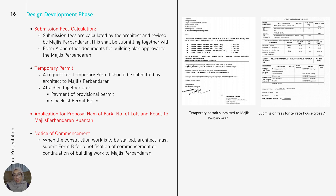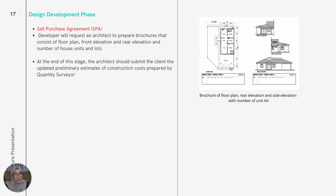Last but not least is the sale and purchase agreement. The developer will request the architect to prepare a brochure consisting of a floor plan, front elevation, rear elevation, number of house units, and lot numbers. At the end of this stage, the architect should also submit to the client an updated construction cost estimate prepared by the quantity surveyor. Shown on the right is an example of the brochure displaying the floor plan, rear elevation, side elevation, and unit lot numbers prepared by the architect.